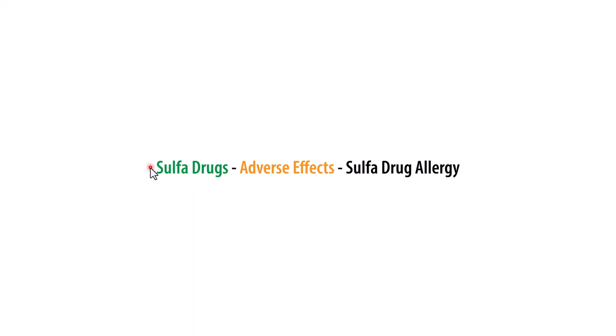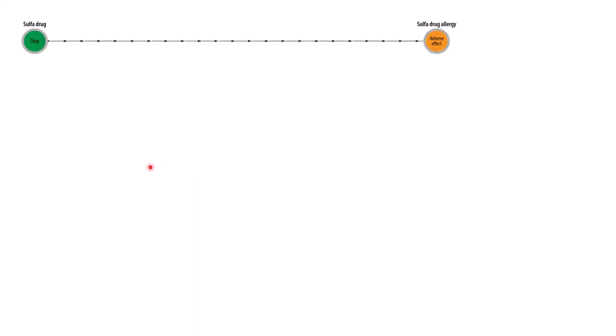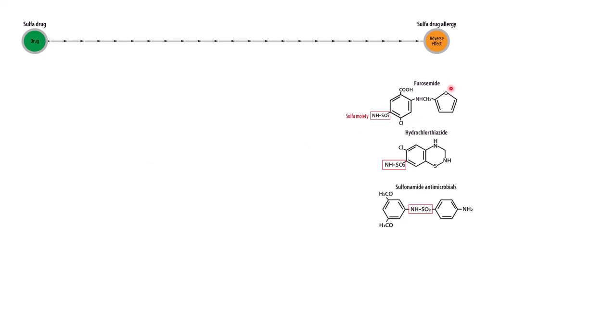Welcome to this lesson on the adverse effects of sulfa drugs and how they can lead to an allergy. Here are three common sulfa drugs that often cause sulfa drug allergies: furosemide, which is a loop diuretic; hydrochlorothiazide; and sulfonamide antimicrobials. They all share this sulfa moiety, which is what causes the allergic reaction.